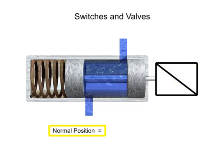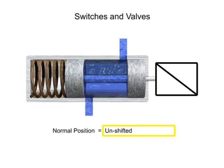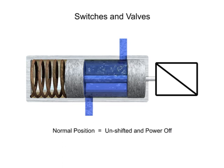The normal position of the valve is defined as the position of the valve when its spool is unshifted and the power is off. This means that any mechanical actuators, such as springs, are in their non-actuated positions.